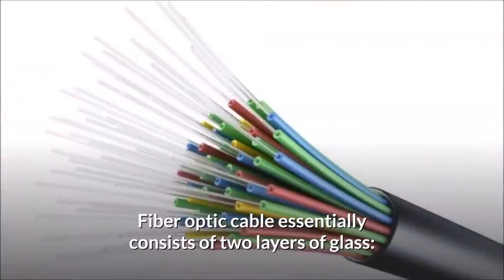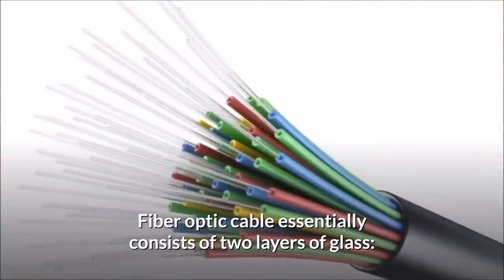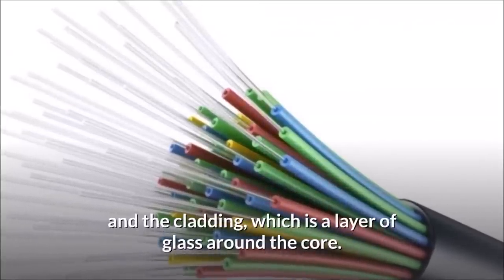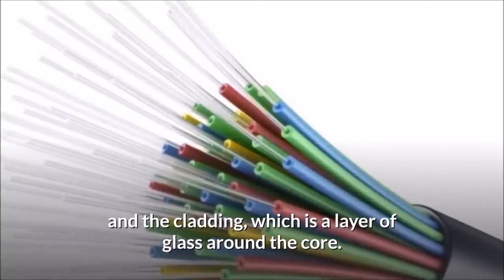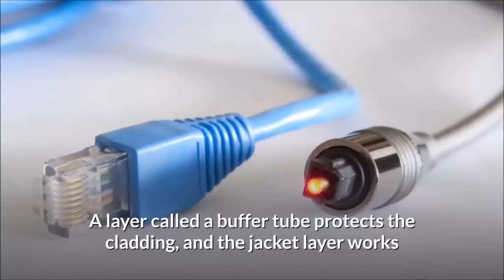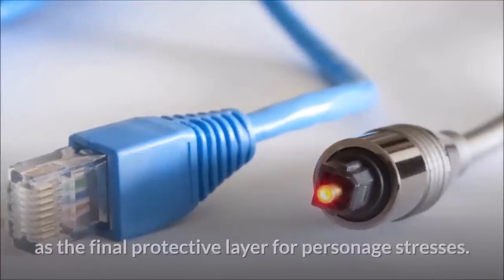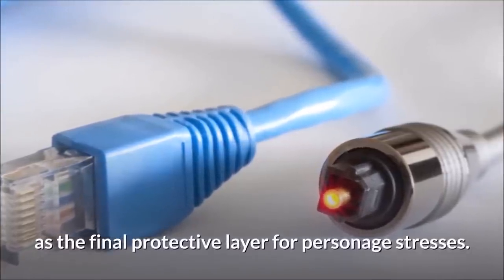Fiber optic cable essentially consists of two layers of glass: the core, which indicates the actual light, and the cladding, which is a layer of glass around the core. A layer called a buffer tube protects the cladding, and the jacket layer works as the final protective layer for physical stresses.